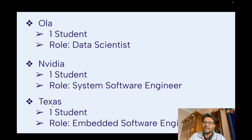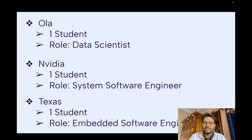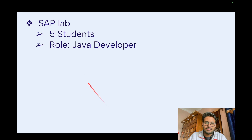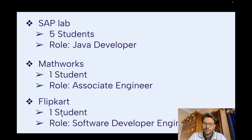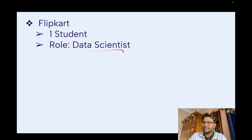Texas Instruments is an EC-aligned company — they took one student for an Embedded Software Engineer role, which is also a system-level job. SAP Labs took five students for Java Developer. MathWorks took one student for Associate Engineer. Flipkart took two students — one for Software Engineer and one for Data Scientist role.